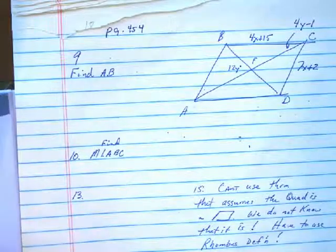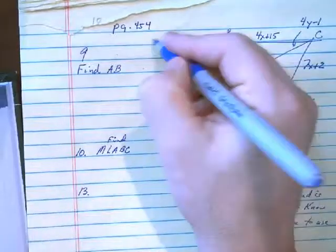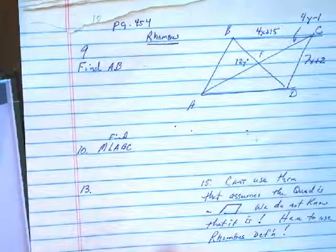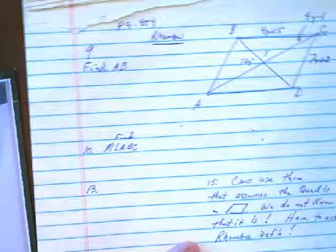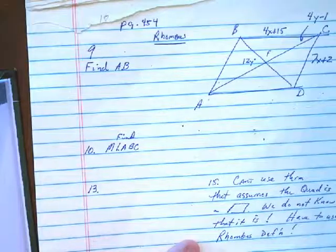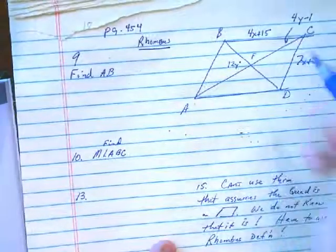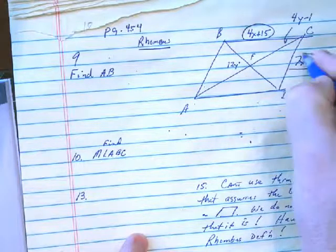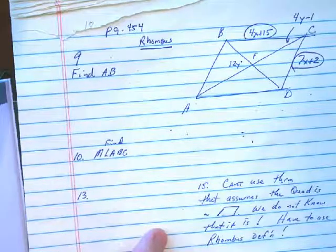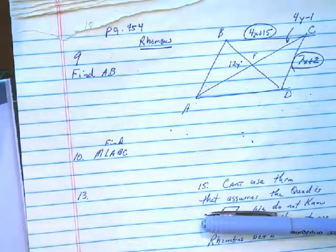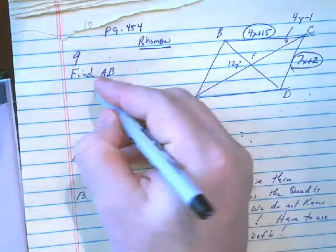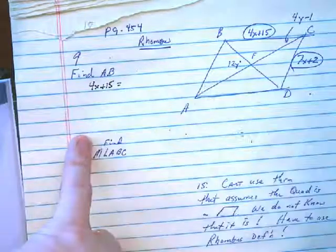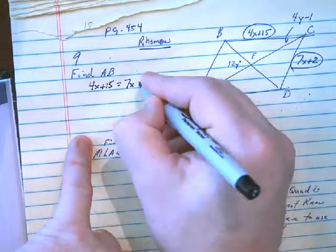This says that ABCD is a rhombus. So that means what do we know about a rhombus? Well, all four sides are congruent. We know that opposite sides are congruent because that's a parallelogram. But if all four sides are congruent, then doesn't that mean that 4x plus 15 and 7x plus 2 are the same because they're sides of a rhombus? Yes it does actually. So we can then create an equation with that knowledge: 4x plus 15 is equal to 7x plus 2.